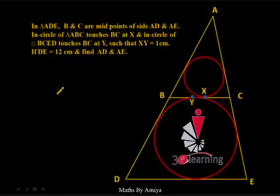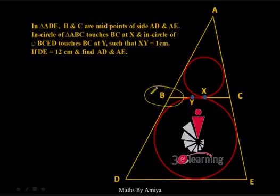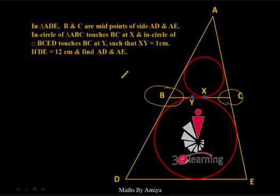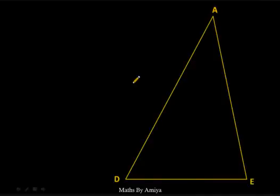Today we try to learn a few concepts, their derivations, and apply those concepts in questions. The first concept: B is the midpoint of side AD and C is the midpoint of side AE. This is one of the most important points. We are going to use this in our first concept. The first figure we have is triangle ADE. B and C are the midpoints of the respective sides.